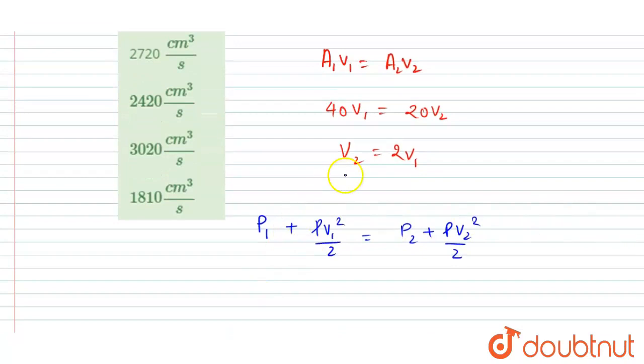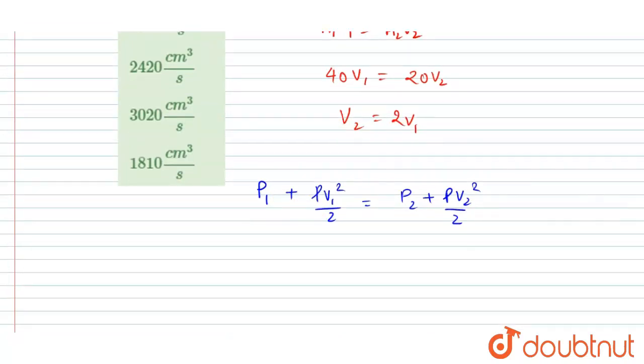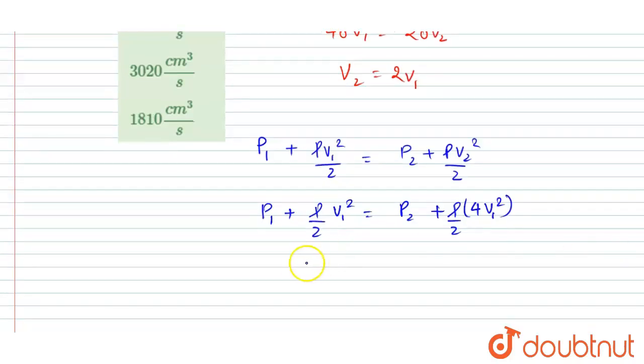Now you can see the relation between V1 and V2. So you can just put the value of V2 as 2 V1. So I will write P1 plus rho by 2 V1 square equals P2 plus rho by 2 into 4 V1 square. You can see P1 minus P2 equals rho by 2, 4 V1 square minus V1 square. So it will be 3 by 2 rho V1 square.